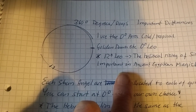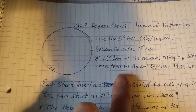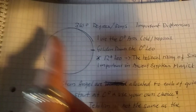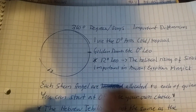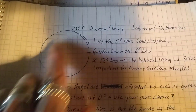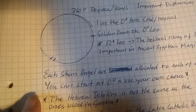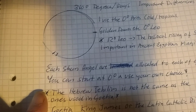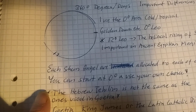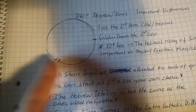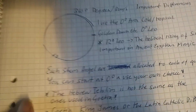When you are connecting to the gem angels, there is not something that you can only do for one day. I used to follow that for the whole world going around the circle, but when it comes to helping others, that's just however it goes and what is needed at that time. Each gem angel is allocated to each of the quinaries, and you can start at zero and use your own choice. These are the three most common ones.